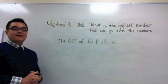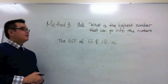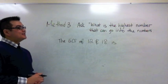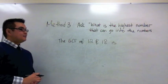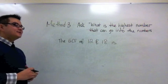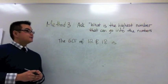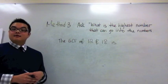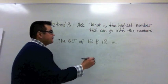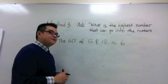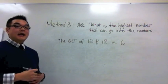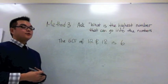For the final method I like to call it the common sense method. You're going to ask what is the highest number that can go into the numbers. If you think about it, what is the highest number that you can think of that goes into both 12 and 18? The answer is 6. Some people find this method beneficial for them because it's the quickest method. However, you have to know what number goes into both.